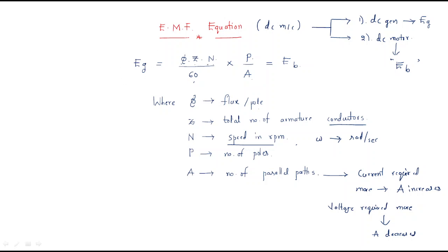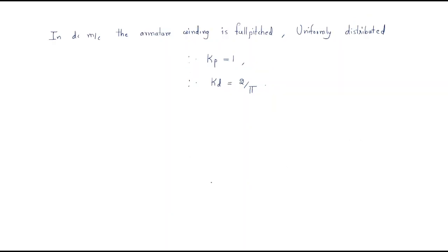Therefore the generated EMF depends on Φ, Z, N, P, and A. The formula can be written directly as: EG = P × Φ × N × Z / (60 × A). This simple formula is useful for solving problems to find the generated EMF as well as the back EMF.